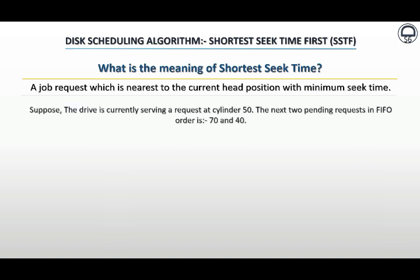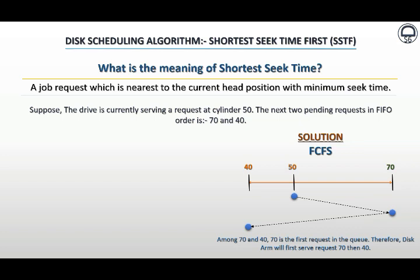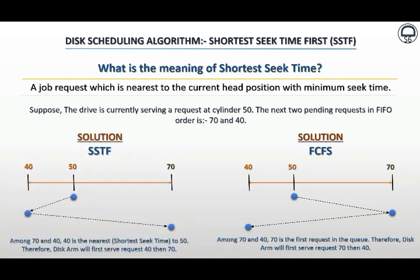Now let us understand what happens in SSTF disk scheduling algorithm compared to FCFS disk scheduling algorithm. Suppose the drive is currently serving a request at cylinder 50, and the next two pending requests in FIFO order are 70 and 40. In the FCFS disk scheduling algorithm it will serve request 70 first and then 40. But in the SSTF disk scheduling algorithm it will serve request 40 first and then 70, because SSTF determines which job is nearest to the current head position with minimum seek time. Therefore, among 70 and 40, cylinder 40 is the nearest to the current head position 50.